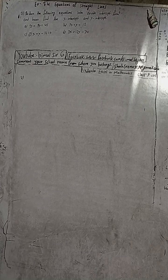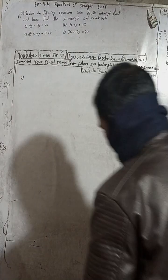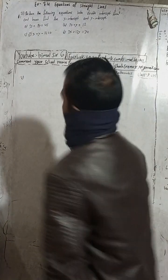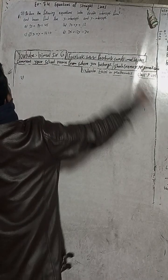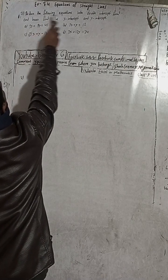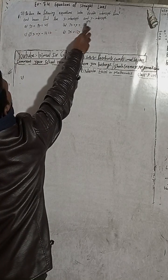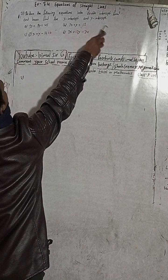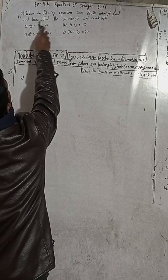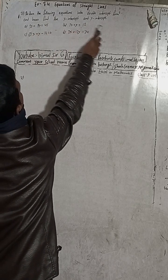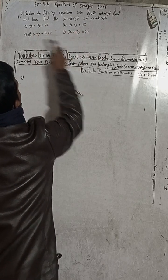Here the question is number 7, exercise 7.4, equations of straight lines. It is from Vedant Excel in optional mathematics class 9. Question number 7: reduce the following equations into double intercept form and hence find the x-intercept and y-intercept.